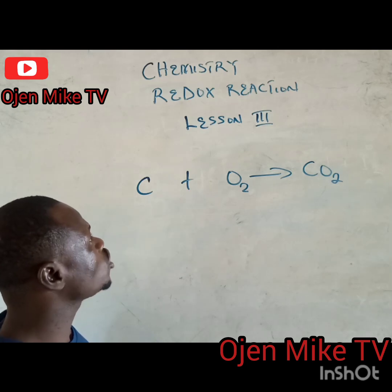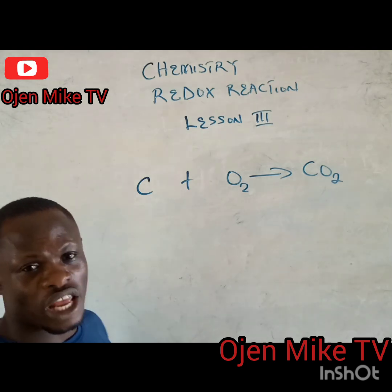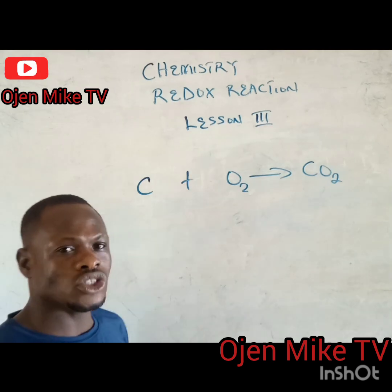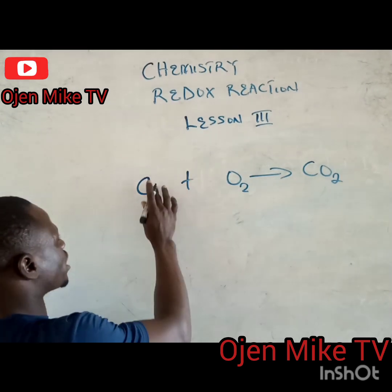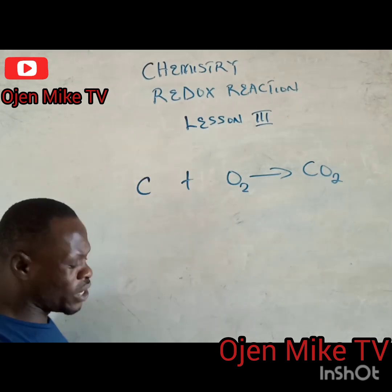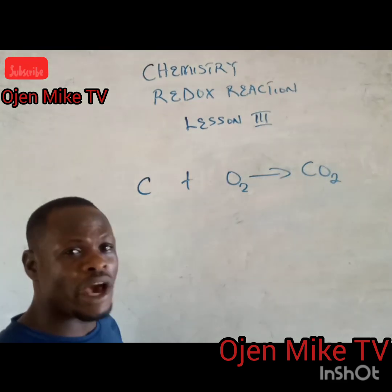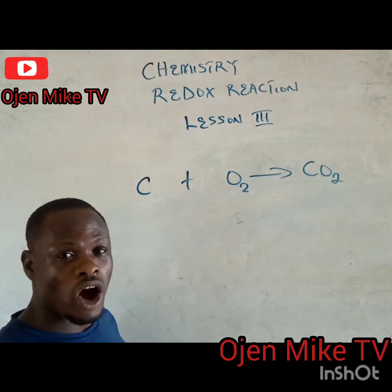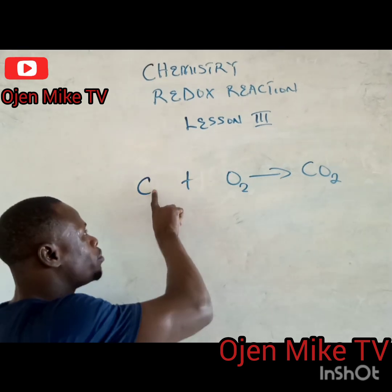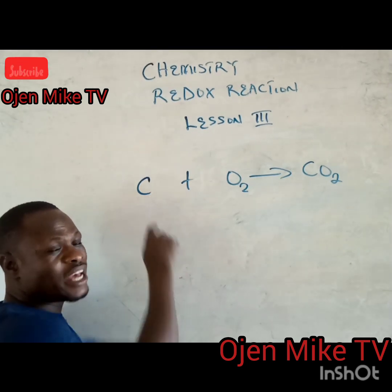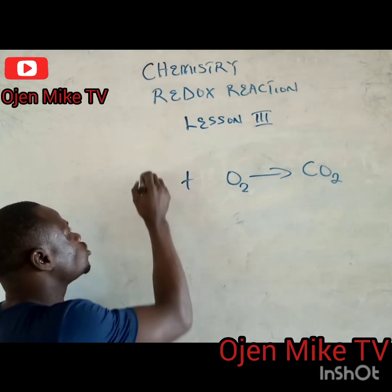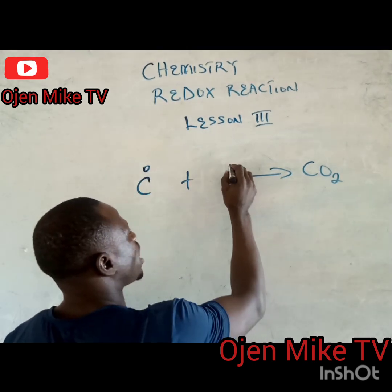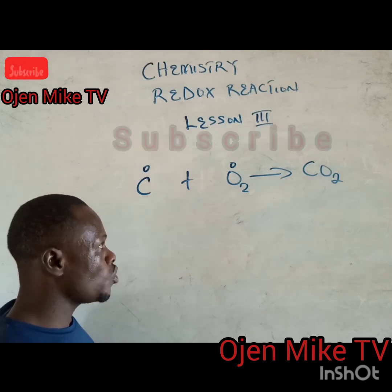Reduction is simply gain of electrons and oxidation is simply loss of electrons. So here, for carbon on the reactant side — whenever an element exists alone, it has an oxidation number of zero. So because carbon here exists alone, it has an oxidation number of zero. And of course, oxygen also has an oxidation number of zero.